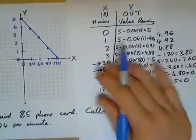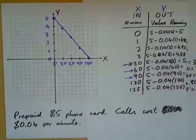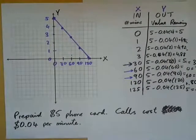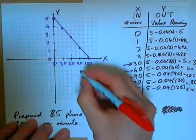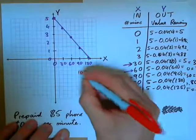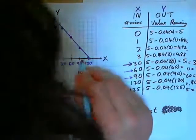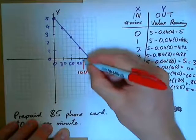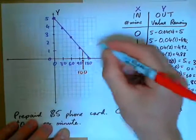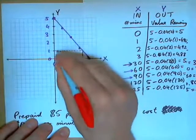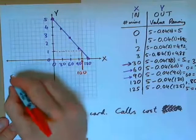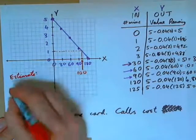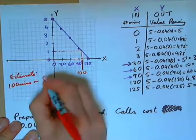Let's estimate the graph for different inputs. After 100 minutes, how much money would be left? 90 minutes is here, 120 is here, so 100 minutes is about there. Go up and hit the graph, then go back — it looks like about $1.00 is left. So after 100 minutes, we've got about $1.00 remaining.